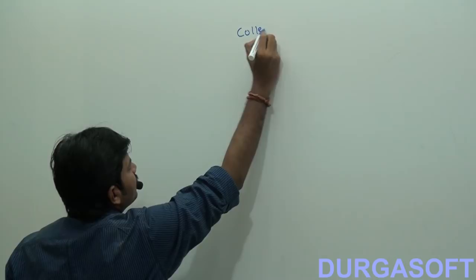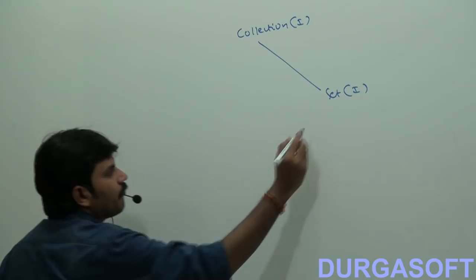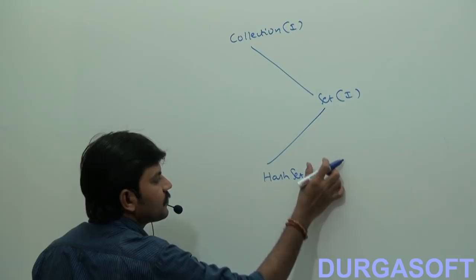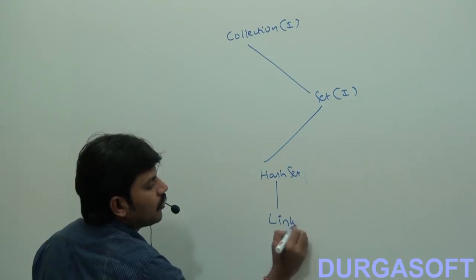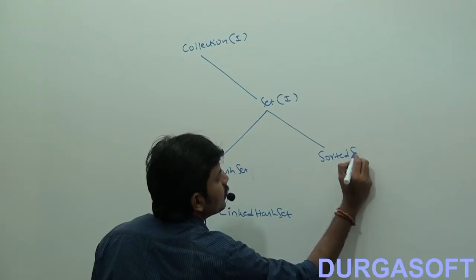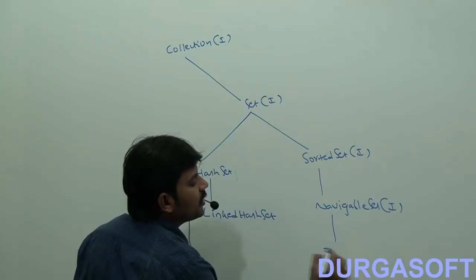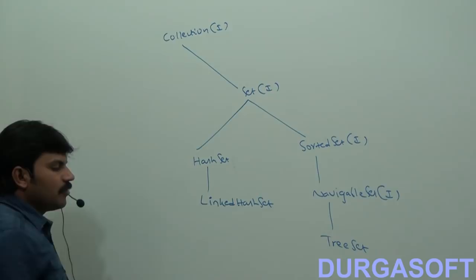In our Collection Framework, Set is the child interface of Collection. Various implementation classes are there: HashSet, LinkedHashSet. Next, we have SortedSet, NavigableSet, and then the implementation class TreeSet.